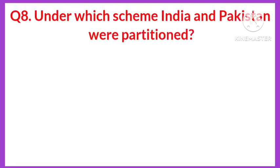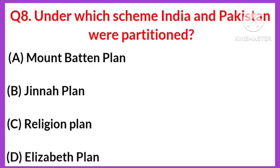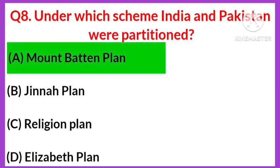Question number eight: under which scheme were India and Pakistan partitioned? Your options are: A) Mountbatten Plan, B) Jinnah Plan, C) Religion Plan, D) Elizabeth Plan. The right answer is option A, Mountbatten Plan.